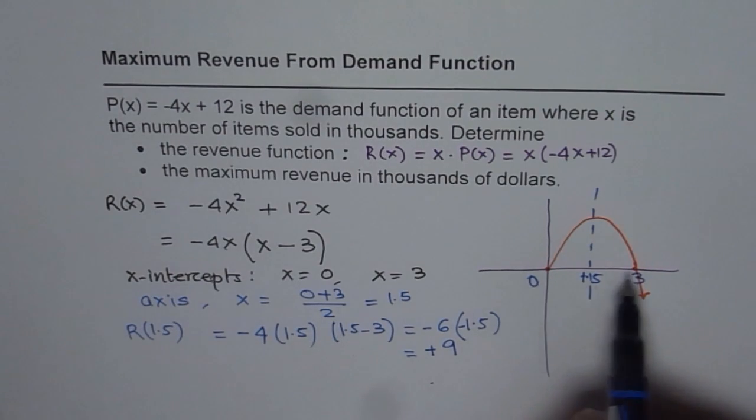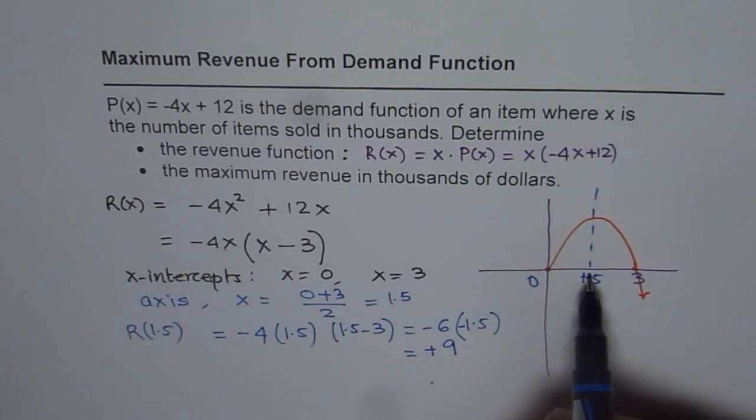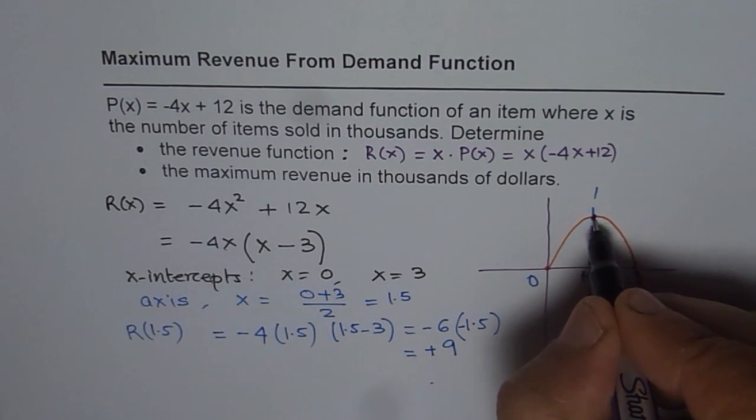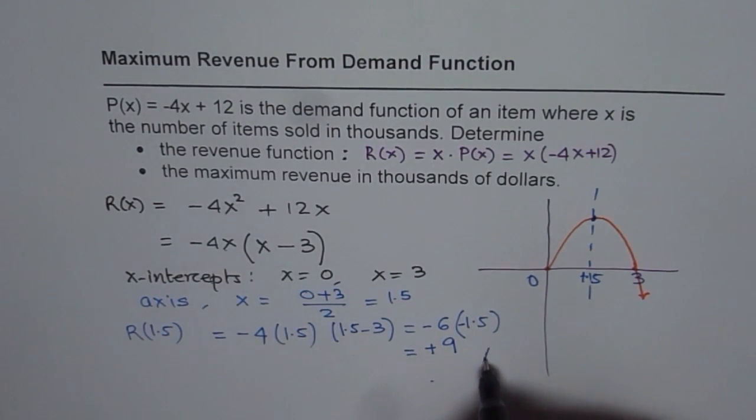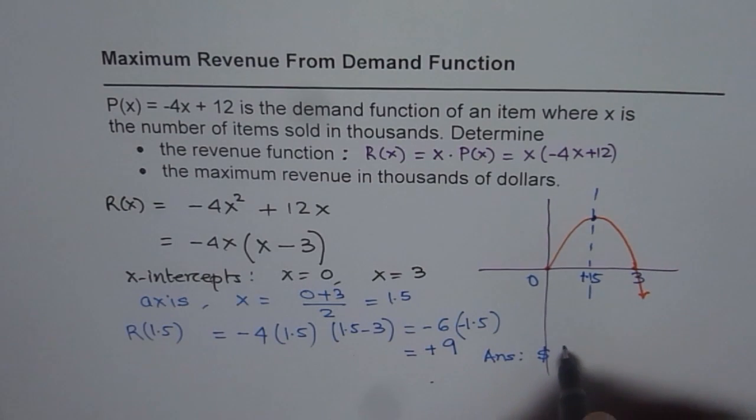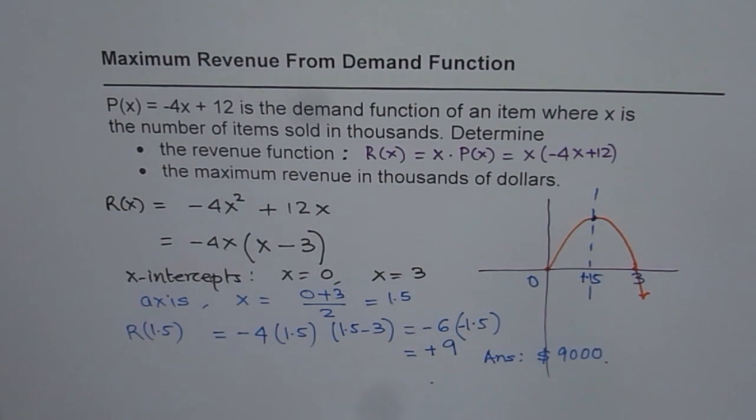So using the two x-intercepts, finding the axis of symmetry, we know vertex always lies on the axis of symmetry, placing that value. We get the maximum possible revenue for this demand function in thousands of dollars. So that is our answer, $9,000. I hope that helps. Thank you.